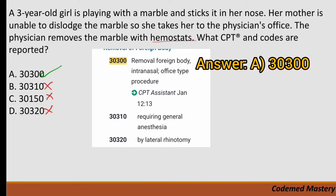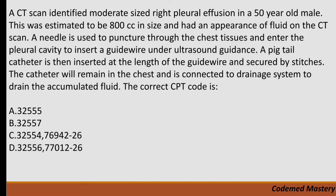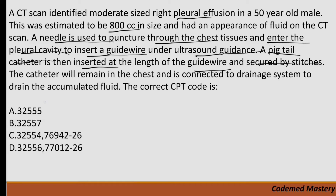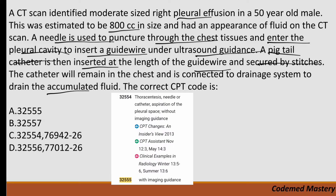A CT scan identified a moderate-sized right pleural effusion in a 50-year-old male. A needle is used to puncture through the chest tissue and enter the pleural cavity to insert a guide wire under ultrasound guidance. A pigtail catheter is inserted along the guide wire, secured by stitches, and the catheter remains in the chest connected to a drainage system to drain the accumulated fluid. Option A is code 32555, for thoracentesis needle or catheter aspiration of pleural space with imaging guidance.